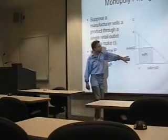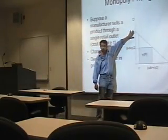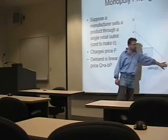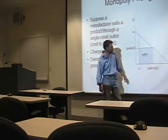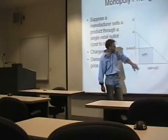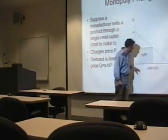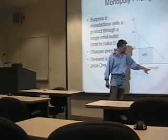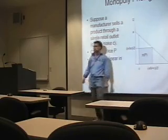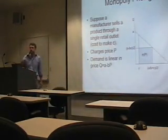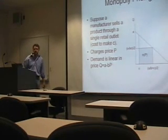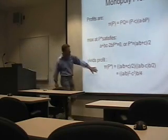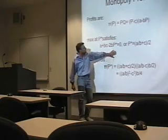Given this demand: if you price at zero, you sell A units; if you price at A/B, you sell zero units. So the rule for a monopolist is that you just price halfway between A/B and your cost. If your cost is zero, you price at half of A/B. In general, the quantity you sell is half of what you would sell if you were a perfectly competitive firm. So you get a profit and a price from that optimization.